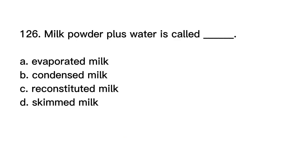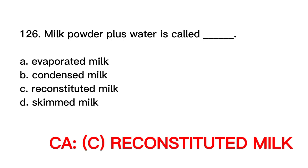Number 126. Milk powder plus water is called blank. A. Evaporated milk. B. Condensed milk. C. Reconstituted milk. D. Skimmed milk. Correct answer is letter C. Reconstituted milk.